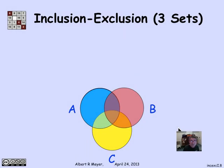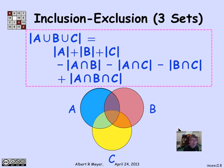Now, inclusion-exclusion for three sets is slightly more complicated: you've got a sum of the intersections of one set, minus the sizes of intersections of two sets, plus the size of the intersection of three sets.